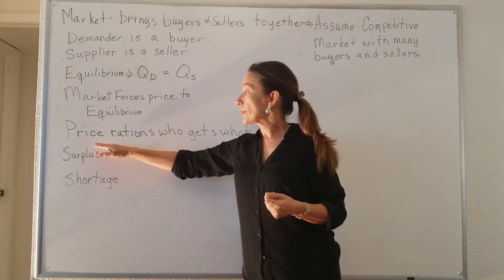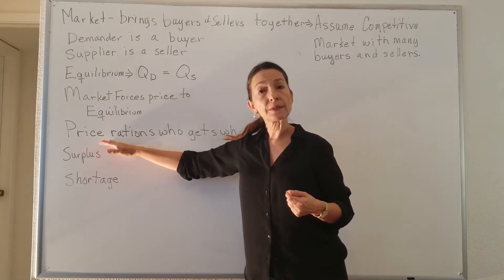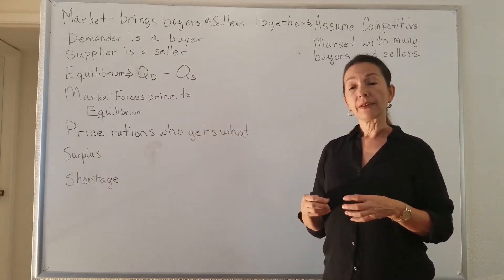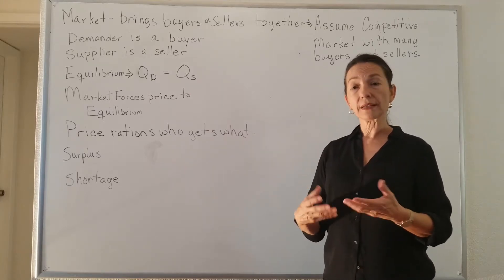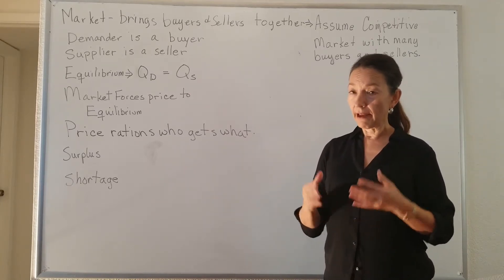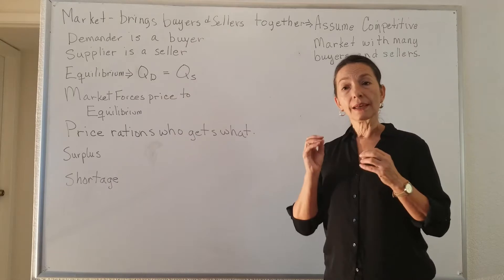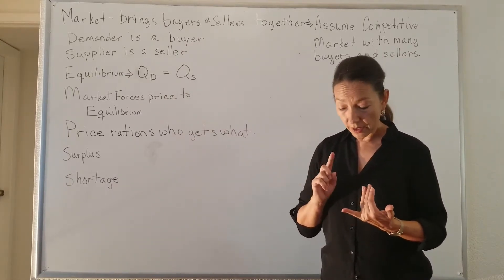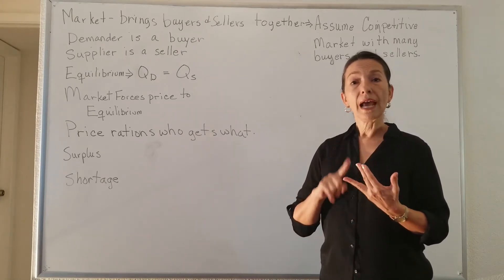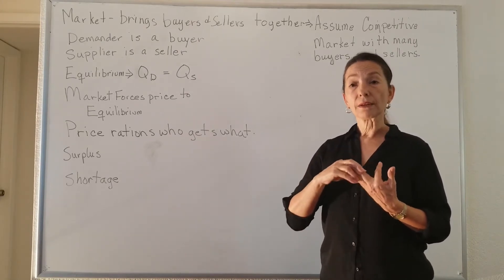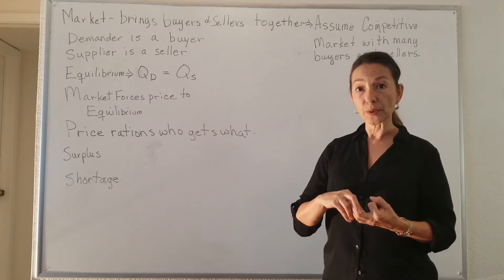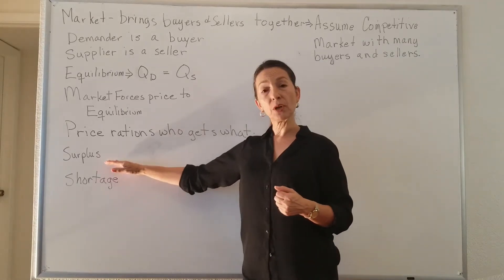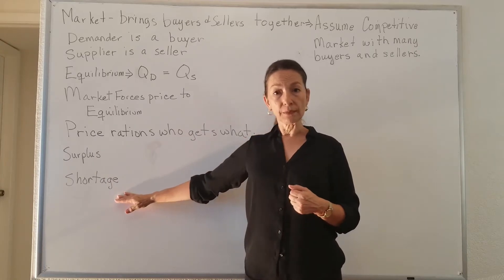The importance of price is that pricing decides who gets what. If you can afford the product, you get it; if you don't, you don't. The market is the decider in terms of our key economic questions about what to produce, how to produce it, and for whom we produce that product. Finally, we're going to talk about surpluses and shortages in the market.